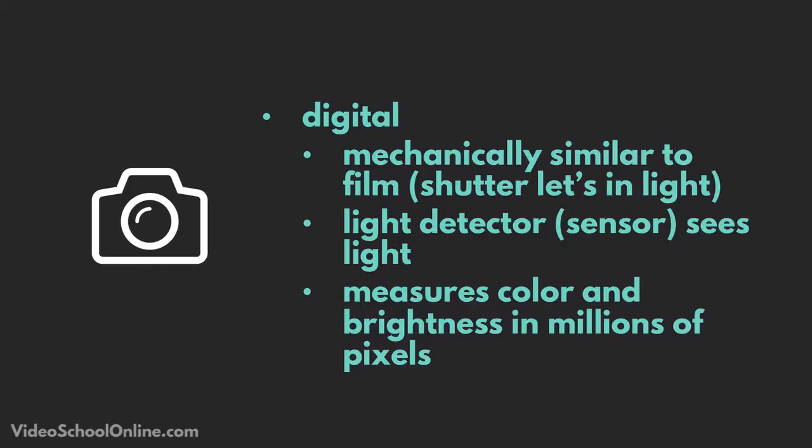Digital photography is very similar to film in the sense that you have a lens, you have a shutter — these things are controlling the amount of light coming in — and you also have an ISO rating. But instead of having a piece of film back here, you have a digital sensor, and that digital sensor reads how much light is coming in.